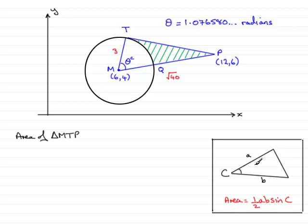If you have two sides, let's say A and B, and an included angle C, the area is a half AB sine C. So, I'm going to use that formula there, and that would be half the product of the two sides. So, that would be 3 multiplied by the square root of 40. And then that's multiplied by the sine of the included angle, which, remember, is the unrounded version up here, 1.076580, and so on. And it's radians. So, I'll just put a little C there to denote that it's radians.